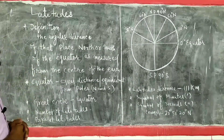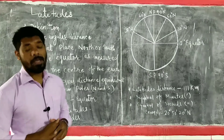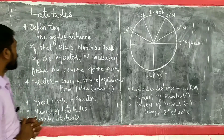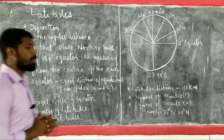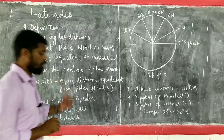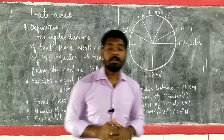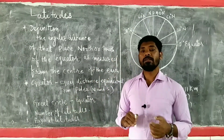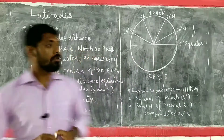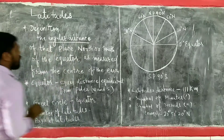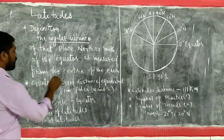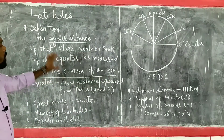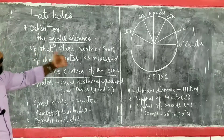First, let us understand the definition of latitude. The latitude of a place is the angular distance of that place north or south of the equator, and it is measured from the center of the earth. Two things you need to remember: it is angular distance, and it is measured from the center of the earth. These two things help us understand how latitudes are given their numbers.